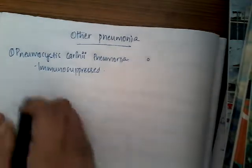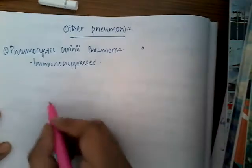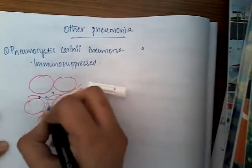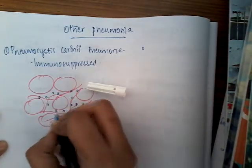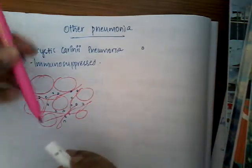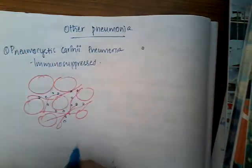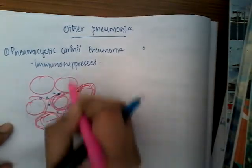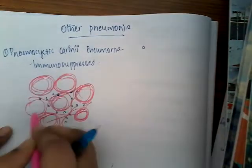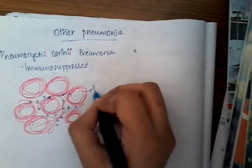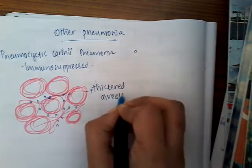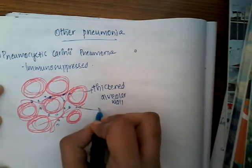Pneumocystis carinii infection is similar to interstitial pneumonia. The pneumonia it causes mostly resembles interstitial pneumonia, with interstitial pneumonitis and thickened alveolar walls. All the alveolar walls are thickened. This is the main microscopic picture we see in Pneumocystis carinii.